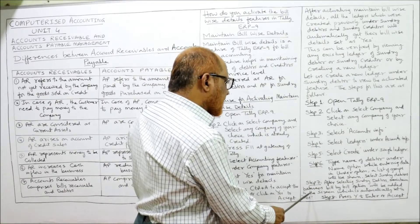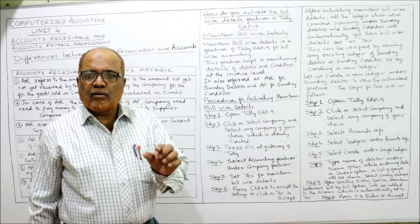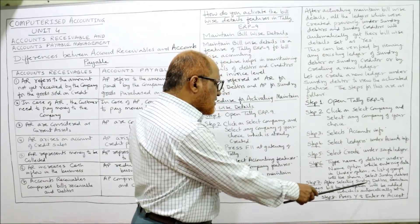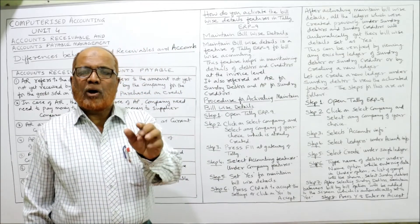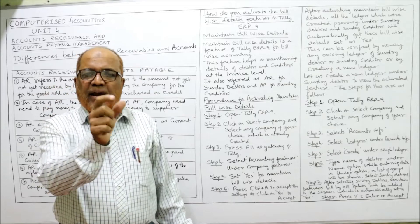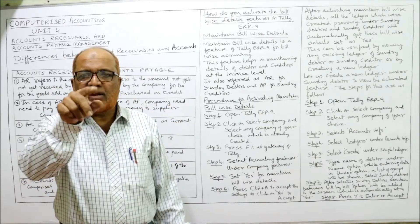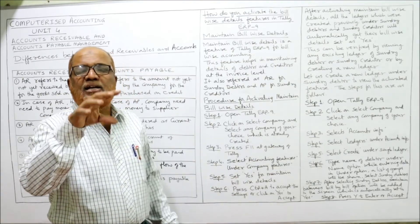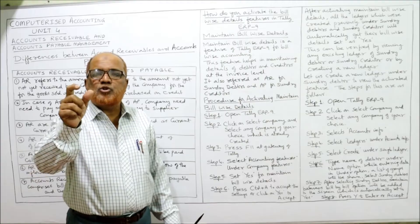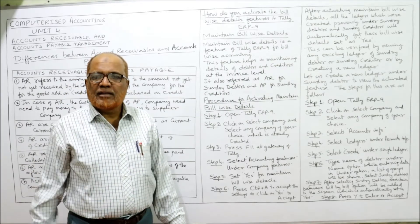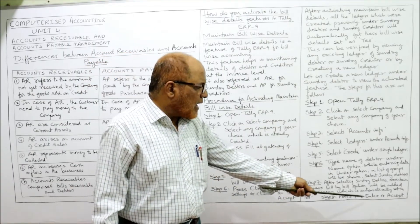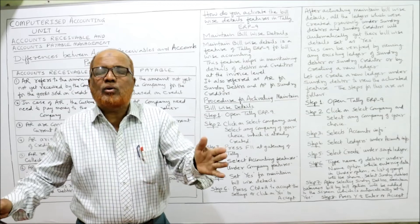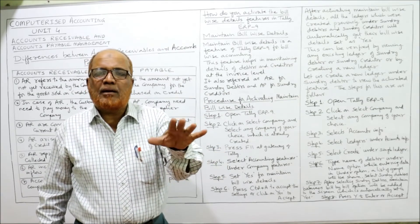After selecting sundry debtors, the maintain balance bill-by-bill option will be added on the screen and will automatically be set to yes. It is automatically set to yes because we have already activated the feature of maintain bill-wise details before creating this ledger account. That is why it shows yes here.